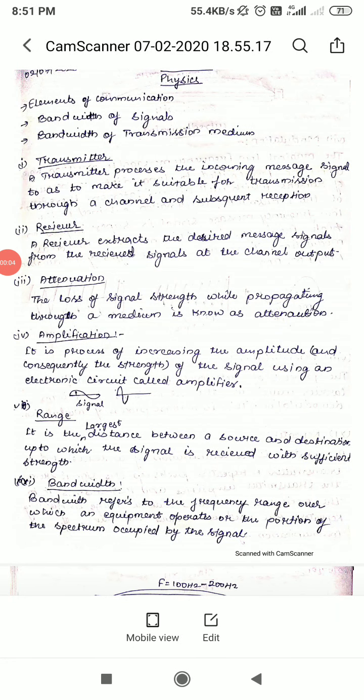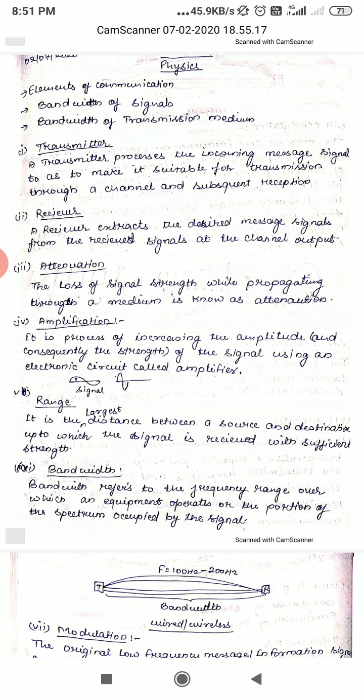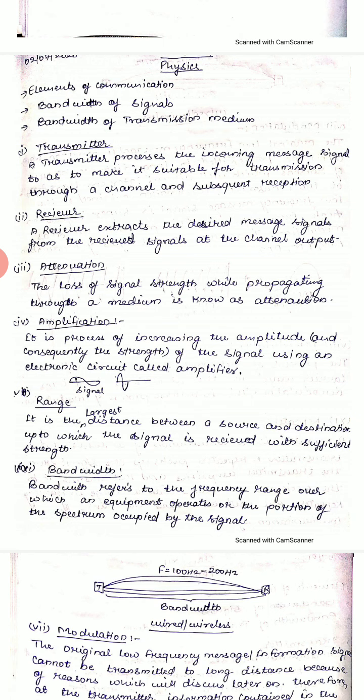Good morning everyone. Today we will discuss the elements of a communication system. In the previous topic, we covered an introduction and the three elements of the communication system: transmitter, receiver, and channel.